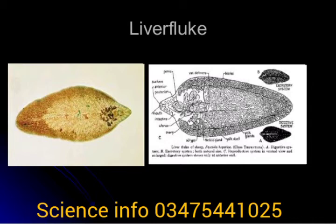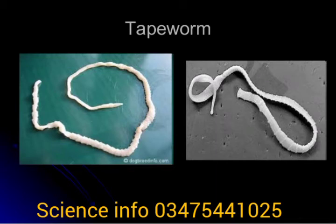The tapeworm is an endoparasite of humans, cattle, and pigs. It completes its life cycle in two hosts; the intermediate host is pig or cattle. They have ribbon-like segments called proglottids which contain sex organs, and these segments break off and pass along with the feces.